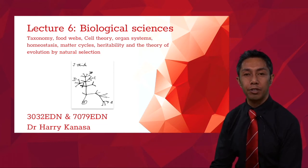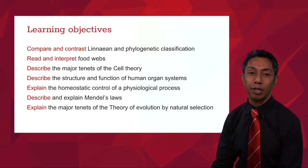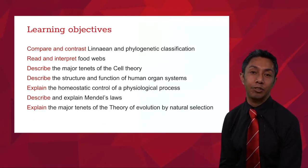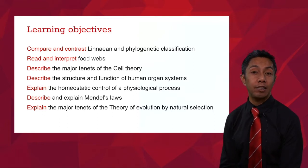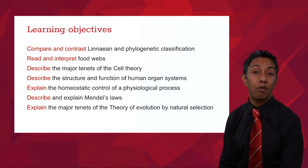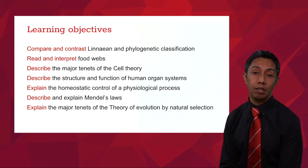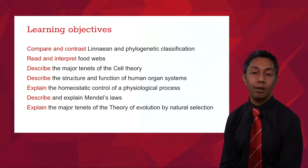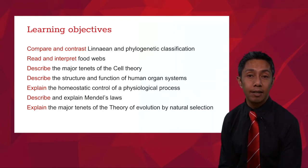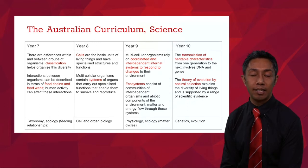Welcome to lecture 6 of 3032 and 7079 EDN on the strand of biological sciences from the Australian Curriculum Science. The learning objectives for this lecture include: comparing and contrasting Linnaean and phylogenetic classification, learning to read and interpret food webs, describing the major tenets of cell theory, and describing the structure and function of a variety of human organ systems.